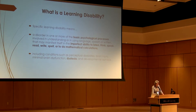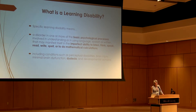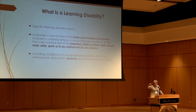A learning disability is basically broken into a couple different components. One is that there has to be some impairment in what's called a basic psychological process. That means a learning disability is due to something that's cognitive — something hardwired into the person's nervous system. What we want to do is figure out where those processes are working well and where they are not.